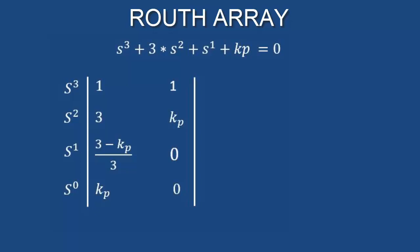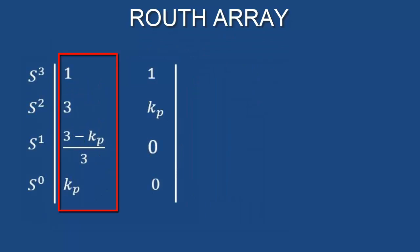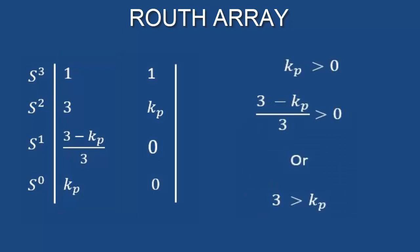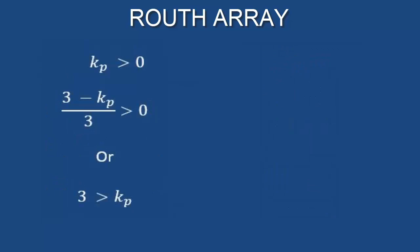For the calculated characteristic equation, we have the Routh array like this. Elements in the first column of the array should be greater than zero. According to this, Kp should be greater than zero and less than three. The upper limit of Kp is three, so Kp represented by KCR equals three.